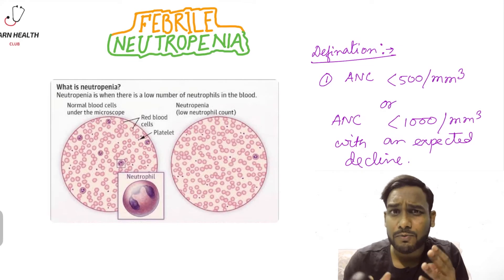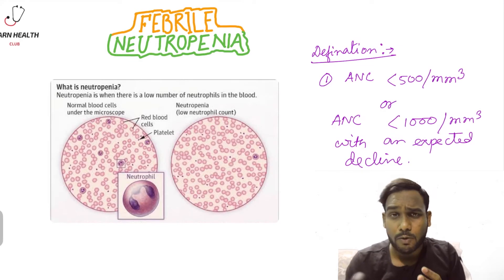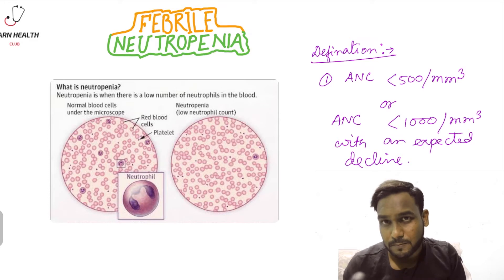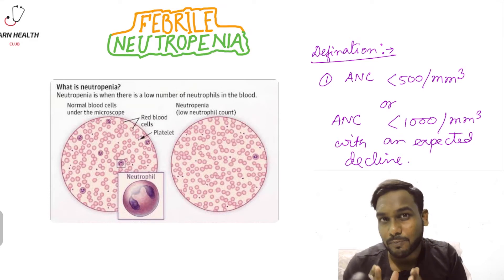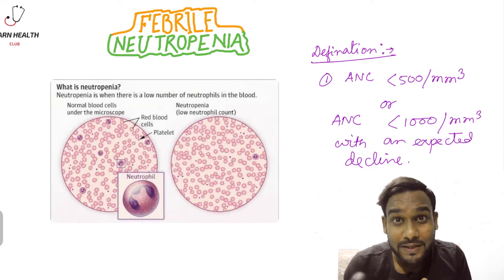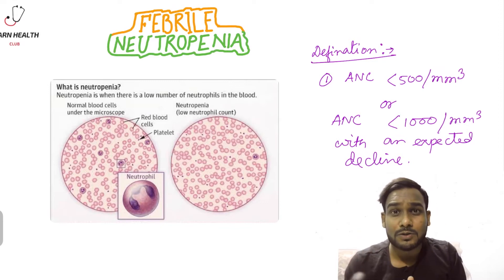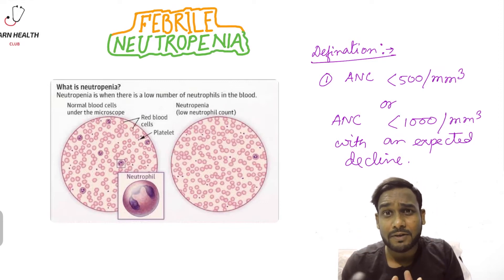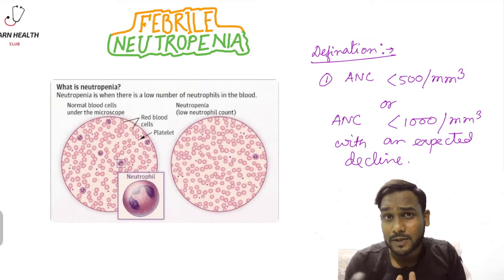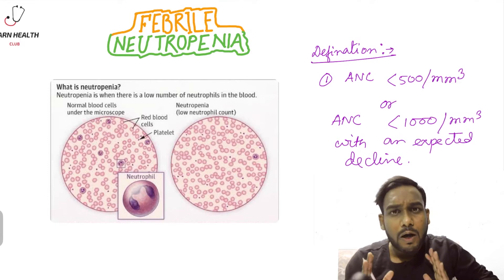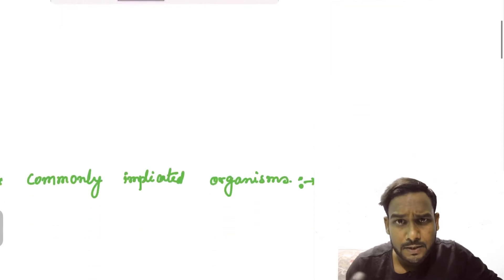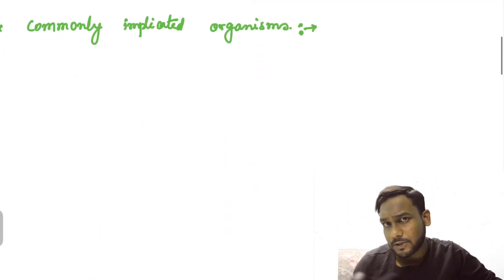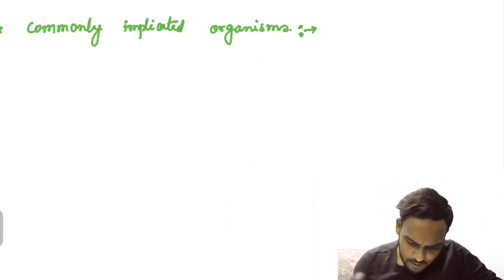The epidemiology of neutropenic patients varies according to geographical location and treatment center. Only 10 to 30 percent of patients yield a microbiological diagnosis, and of those, gram-positive bacteria account for 60 to 70 percent of microbiologically positive cases. Now we will see some common etiological agents in febrile neutropenic children.